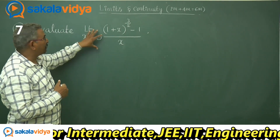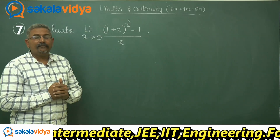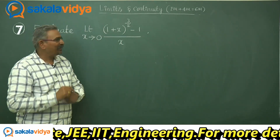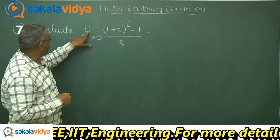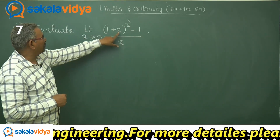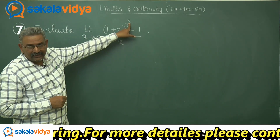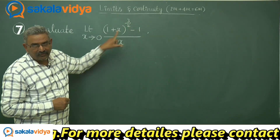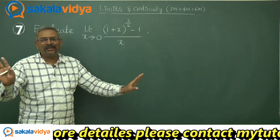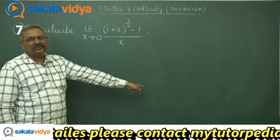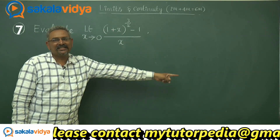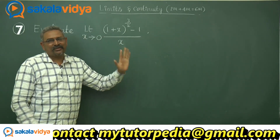Whenever these kinds of problems appear in competitive entrance examinations, it is very simple. Whenever the limit x tends to 0 of (1+x)^n minus 1 divided by x appears, the answer is n only. So that means the answer here is 3/2. We need to show that our answer is 3/2.